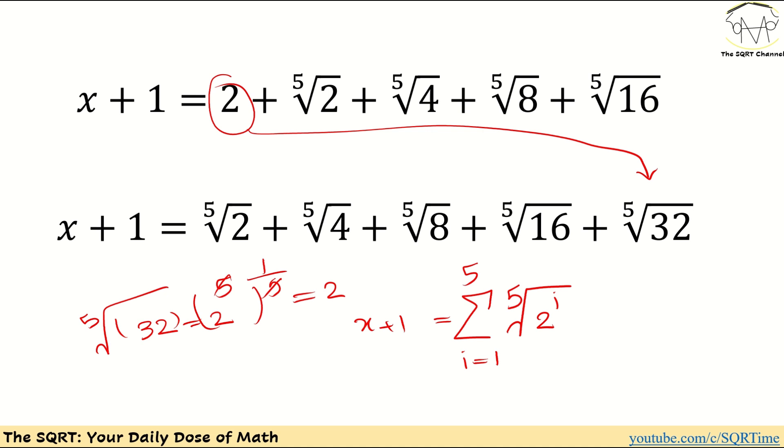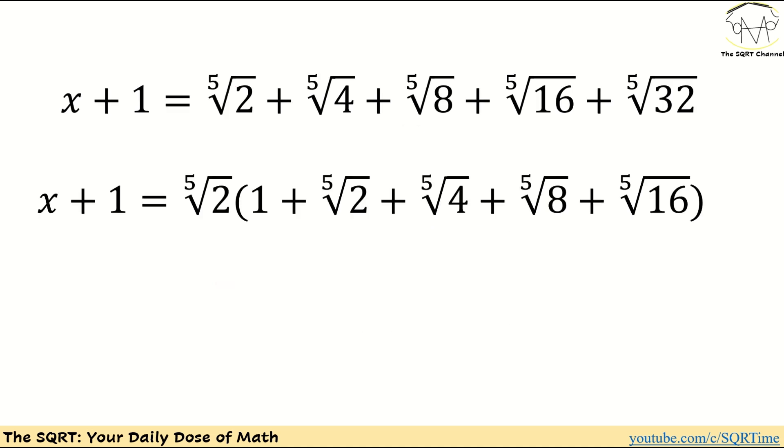Now let's see how we are going to continue from here. First of all what I'm going to do is very interesting. I'm going to factor out the fifth root of two here. For the first one is going to be one, for the second one is going to be what you see here, and finally I can write it down as sum of values that you see here.